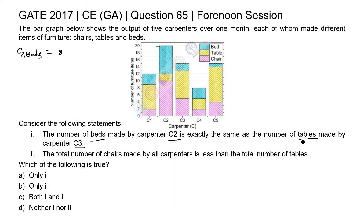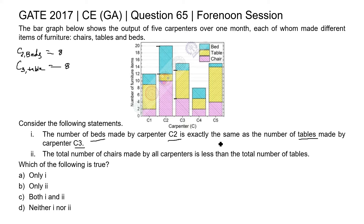Now check the number of tables made by carpenter C3. The table color is depicted by yellow. In the bar graph, the upper limit is 13 and the lower limit is 5, so 13 minus 5 equals 8. Both values are the same, confirming that the number of beds made by carpenter C2 is exactly the same as the number of tables made by carpenter C3. So the first statement is true.